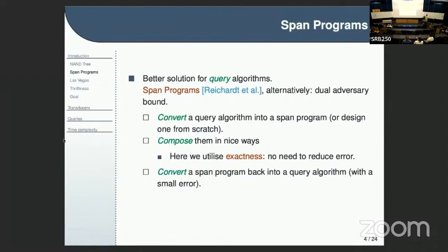The idea is to use span programs, which is essentially the same thing as the dual adversary bound. You start with your bounded-error query algorithm and convert it into a span program, or you can design a span program from scratch. Then you compose span programs together, and at the end convert back into a query algorithm. There is a real world and an ideal world — the ideal world has span programs composed without error, with exactness — and you can transfer in both directions. This gives an optimal algorithm for NAND trees.